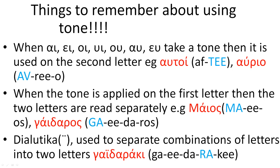And finally, something that although doesn't really have to do with the tone, I think it is best to mention it along with this lesson: dialytika. Dialytika is these two small dots that you see on top of a letter, for example in the word gaidaraki, which means small donkey. Their sole purpose is to separate a combination of letters so that they are read as two different letters — because we need a way to read a combination of letters separately, although it doesn't have a tone.